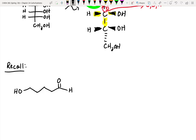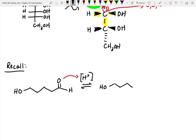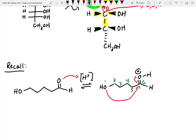Why does ring closure occur? If you have an aldehyde and some catalytic acid around, the first thing that happens is the CO double bond gets protonated. Now we've got a protonated aldehyde that's really electrophilic, and the alcohol can add in and kick up electrons. The reason this happens is we go one, two, three, four, five, six — so we'd make a six-atom ring.